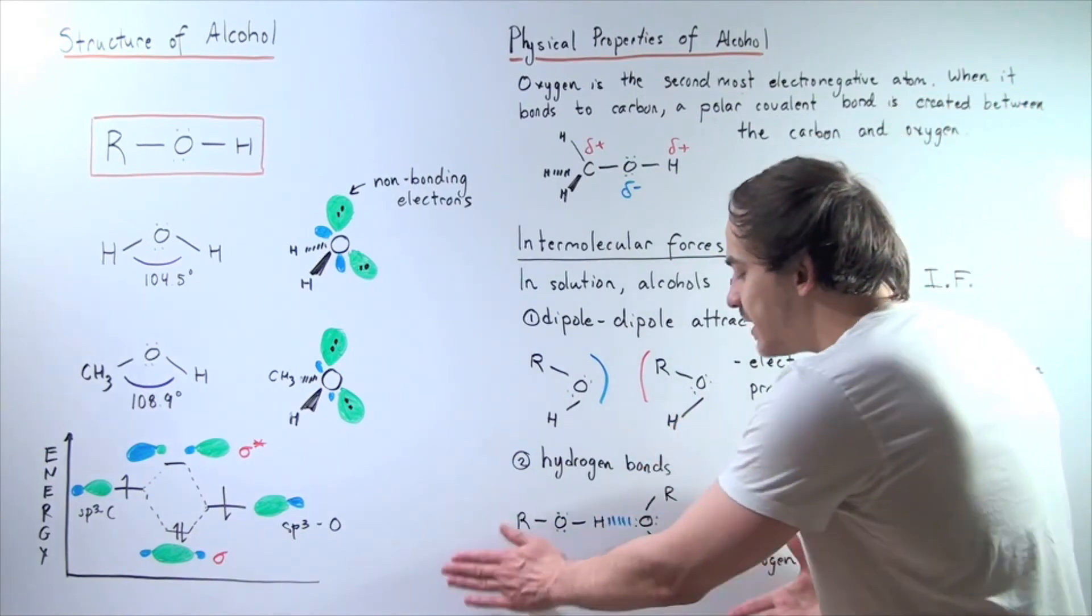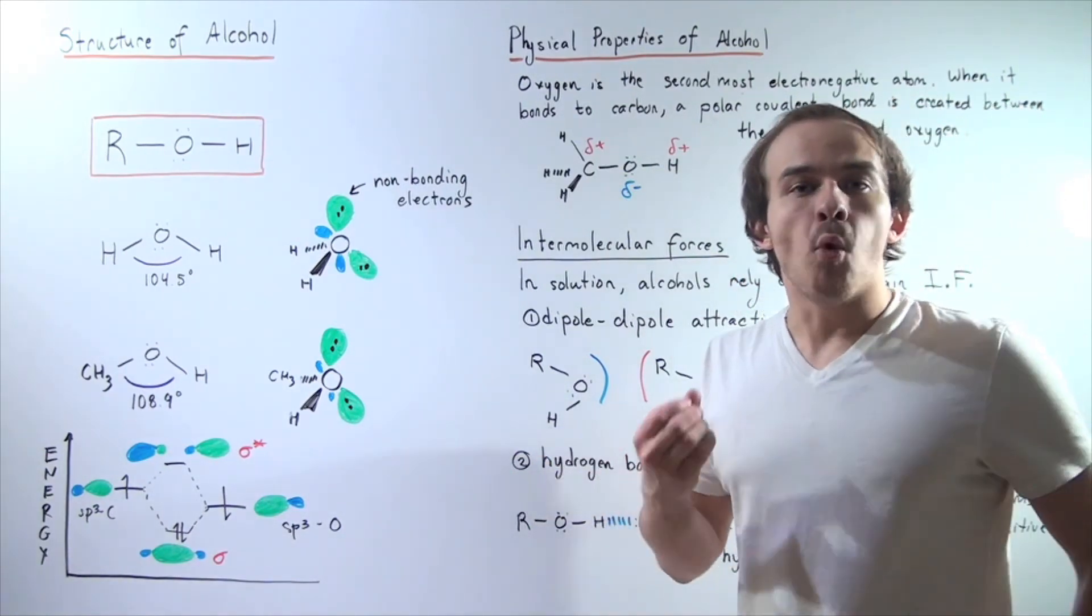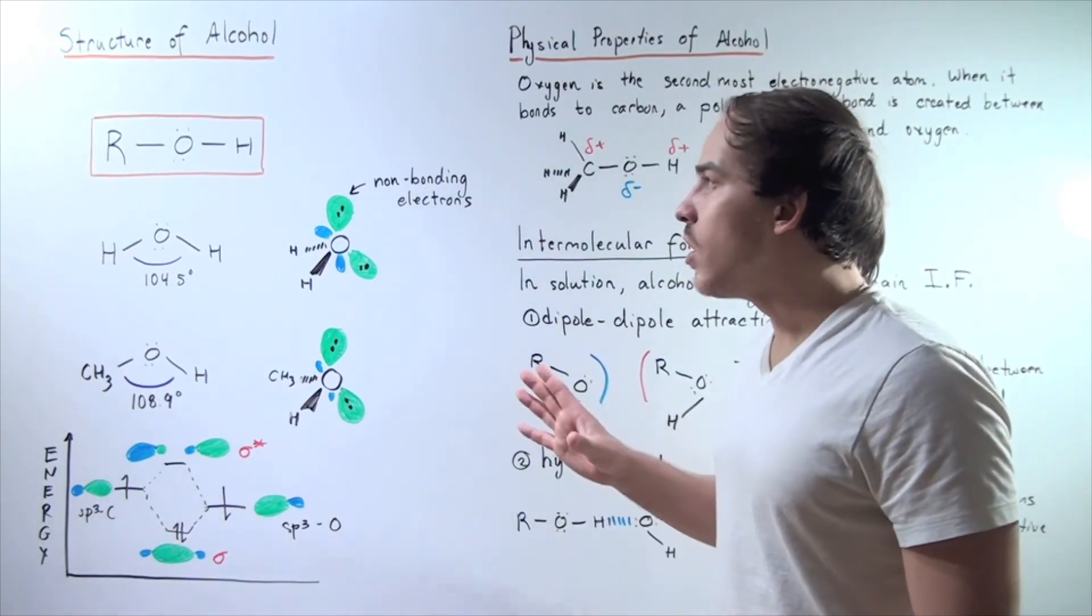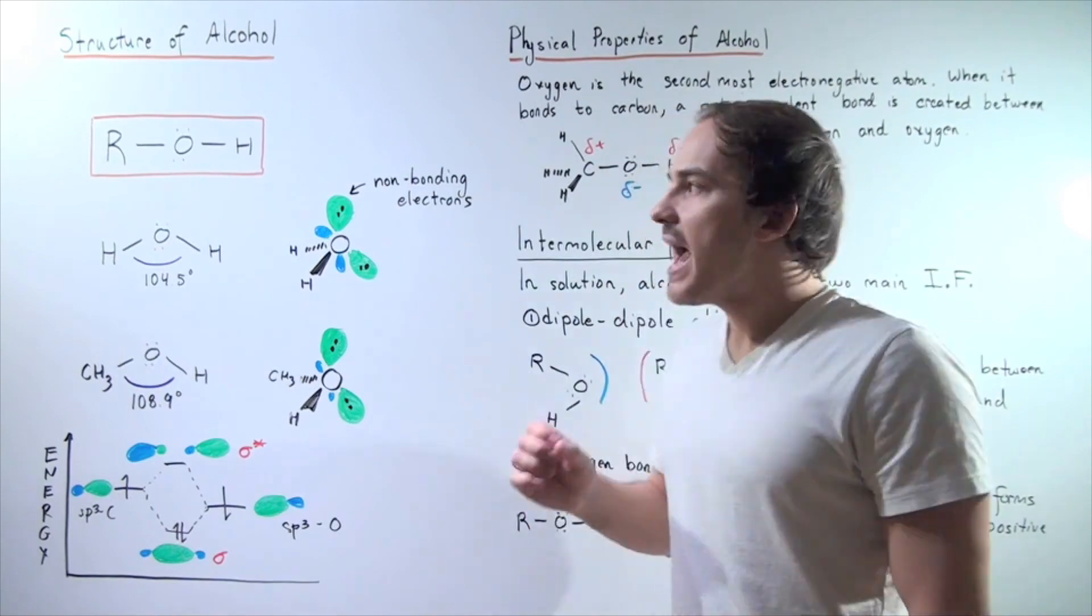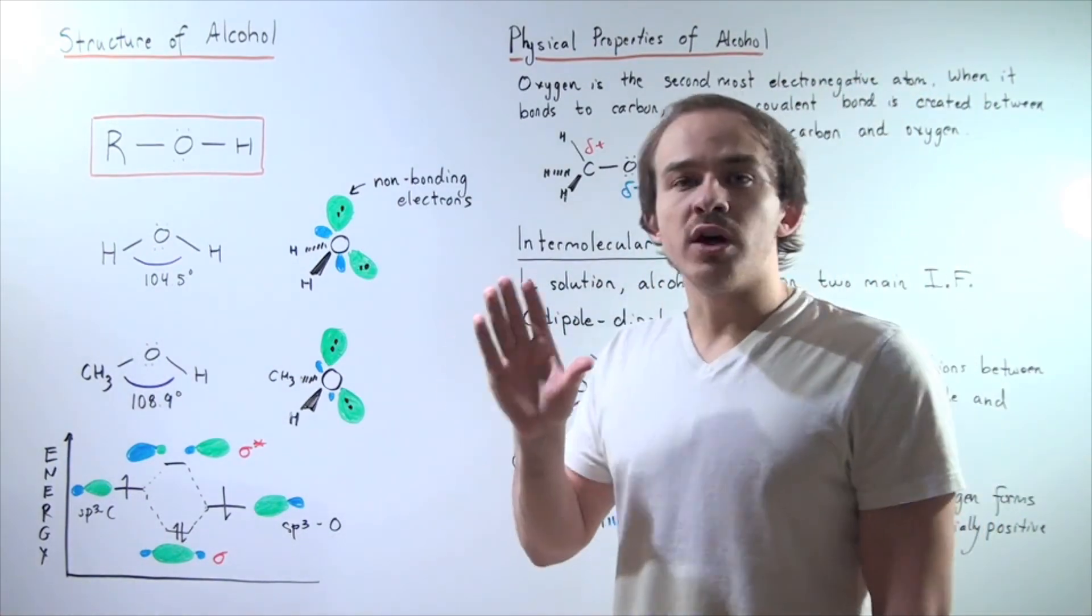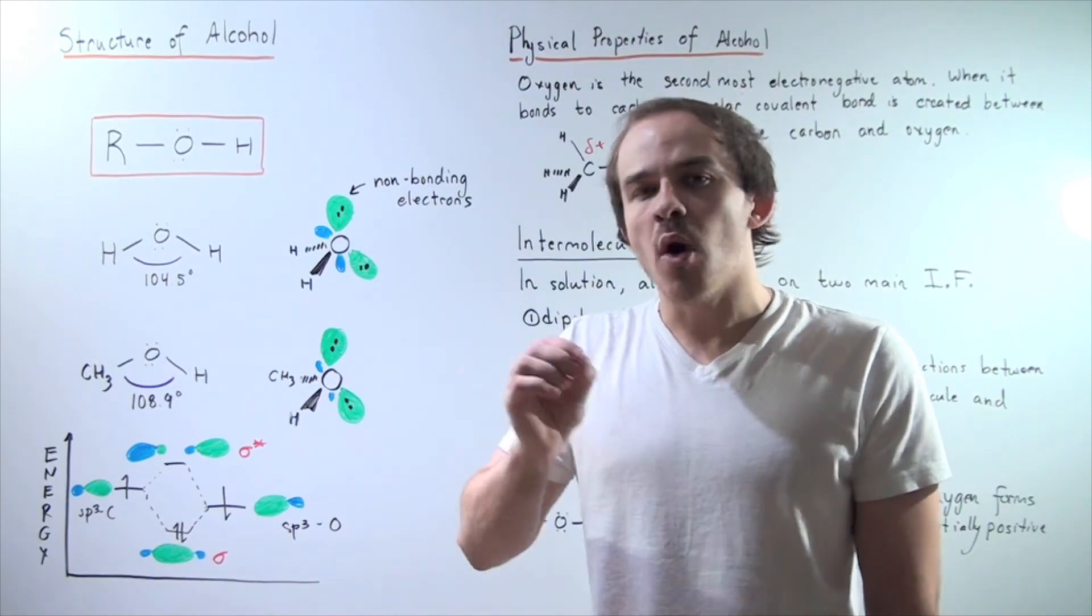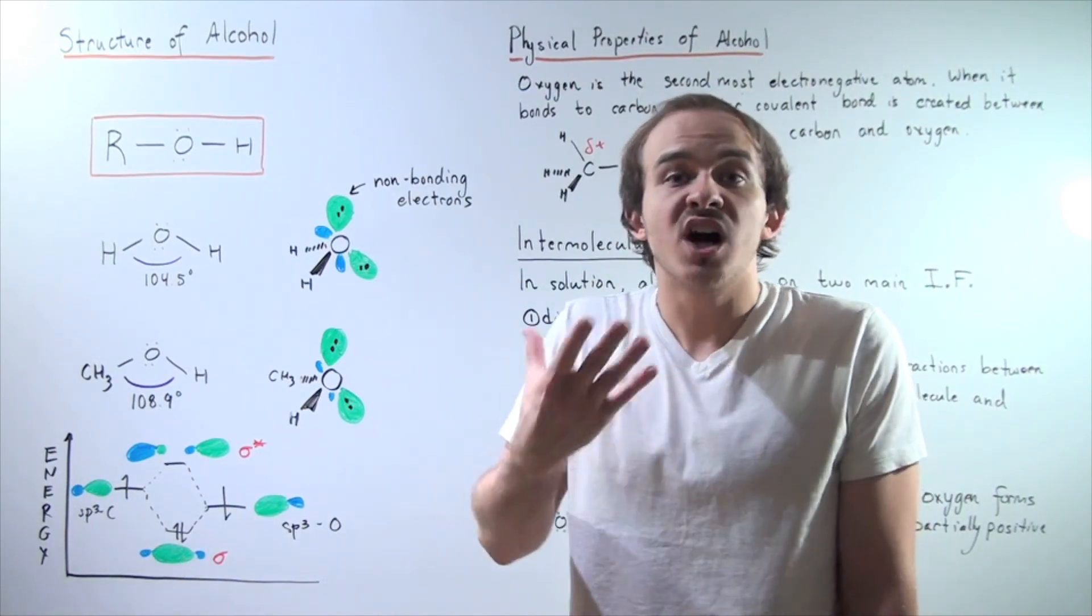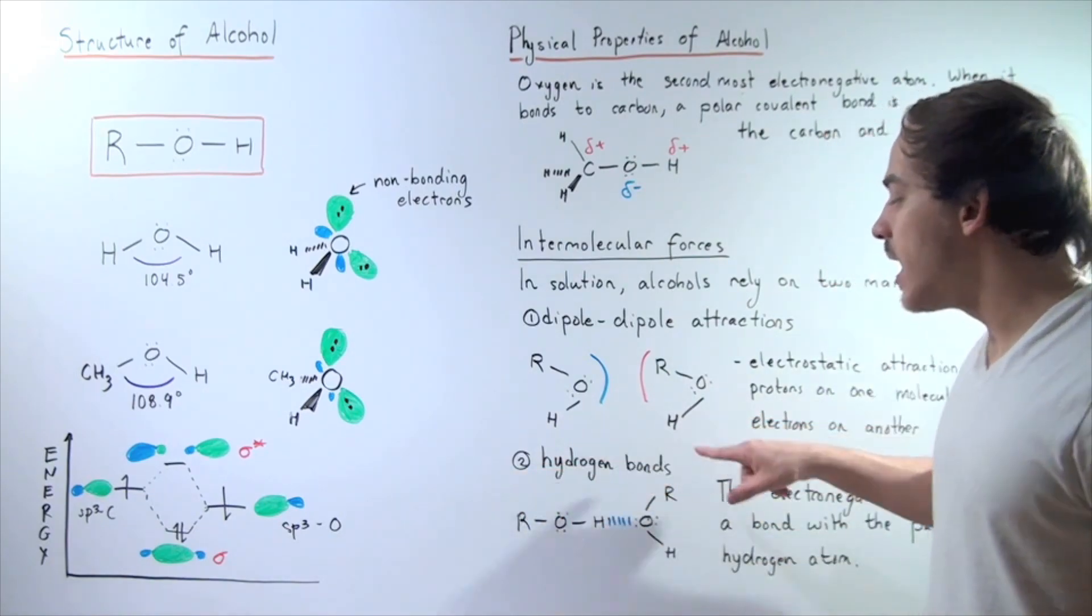Together, because of these types of bonds, they raise the boiling point of our alcohols. Compared to alkanes, alkenes, and alkynes, our alcohols will have a relatively high boiling point because a lot of energy is required to break or overcome these H bonds, these hydrogen bonds.